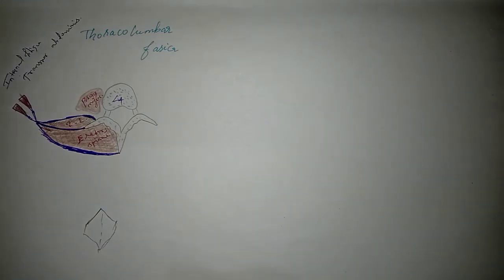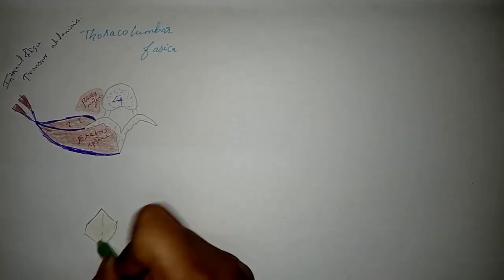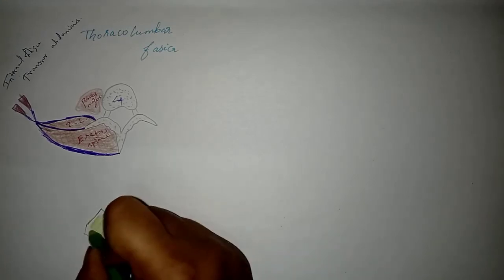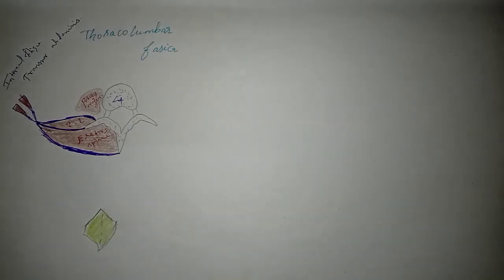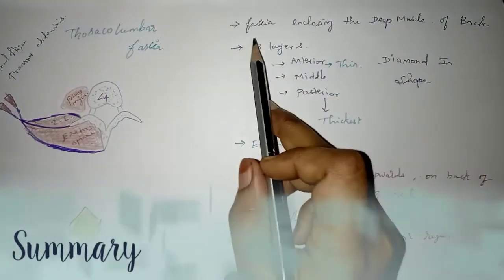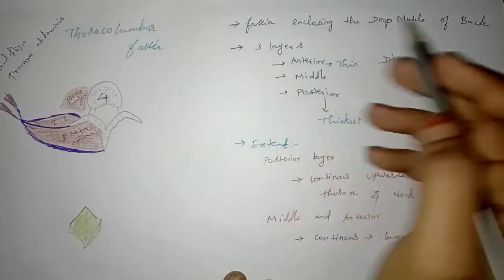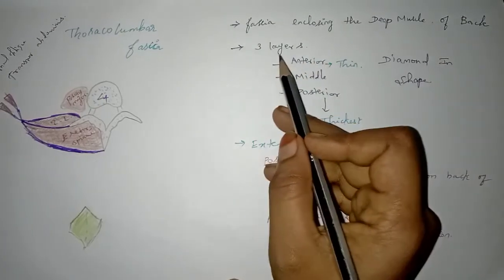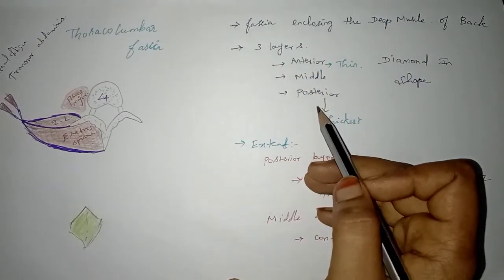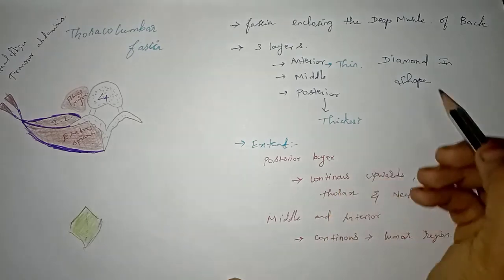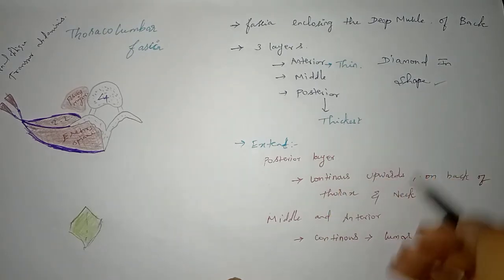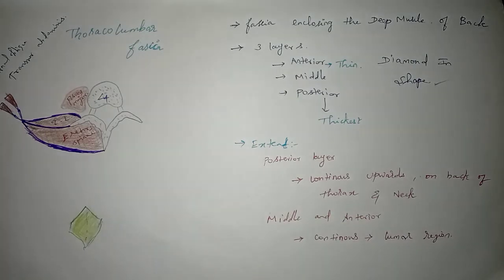The outer appearance of the thoracolumbar fascia is diamond-shaped. To summarize: the lumbar fascia is a fascia enclosing the deep muscles of the back. It forms three layers — anterior, middle, and posterior. The anterior layer is the thinnest and the posterior layer is the thickest.